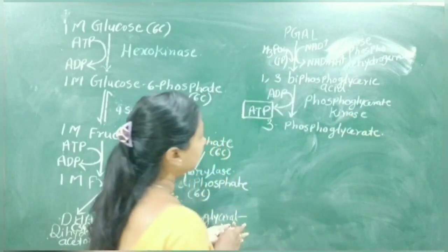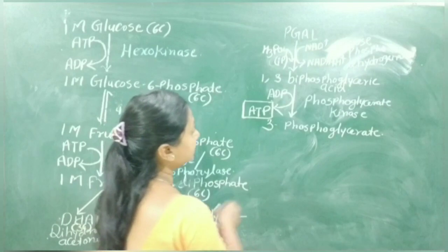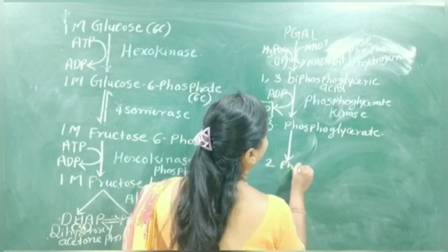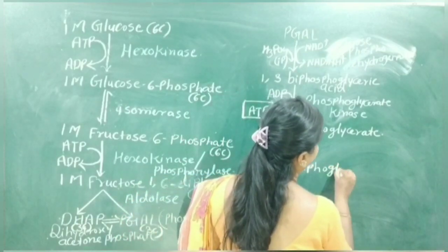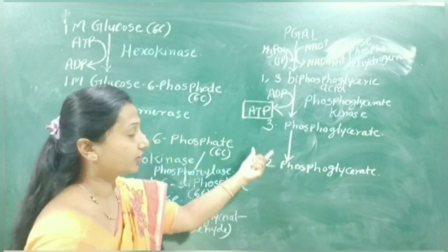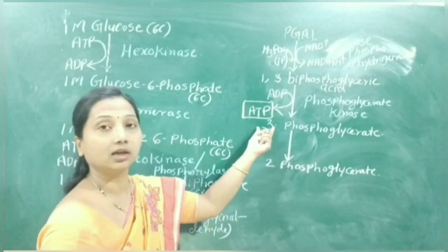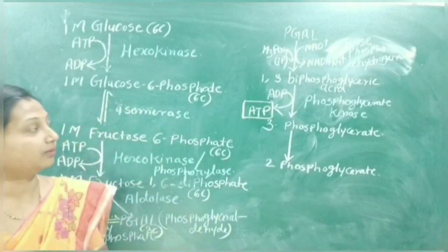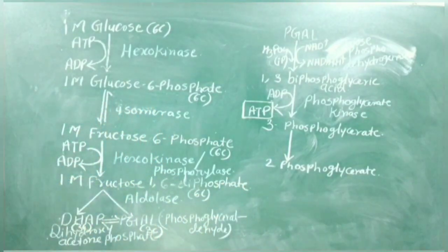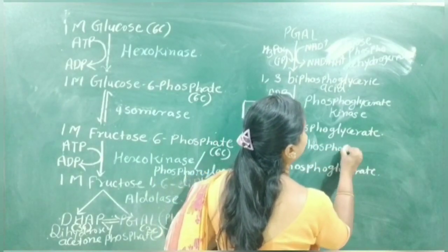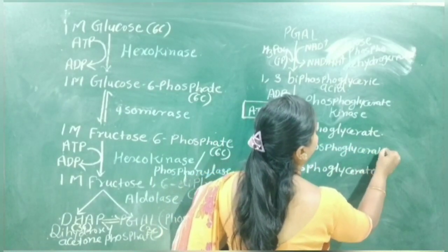3-phosphoglycerate is converted into 2-phosphoglycerate. Here only the position of the phosphate group changes — from the third position to the second position. The enzyme that helps is phosphoglycerate mutase.